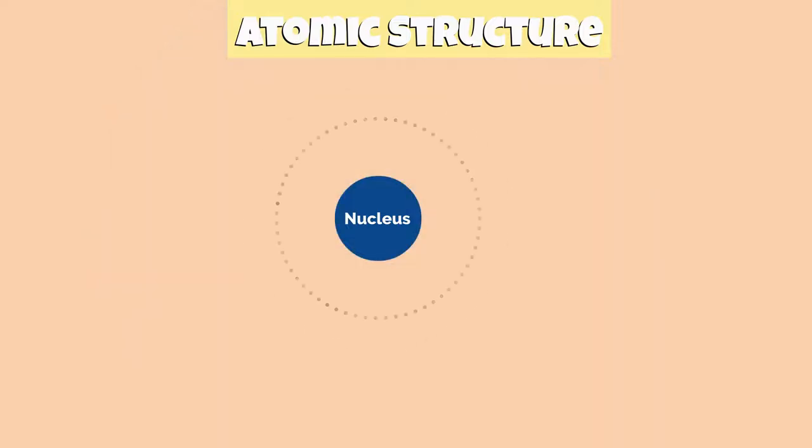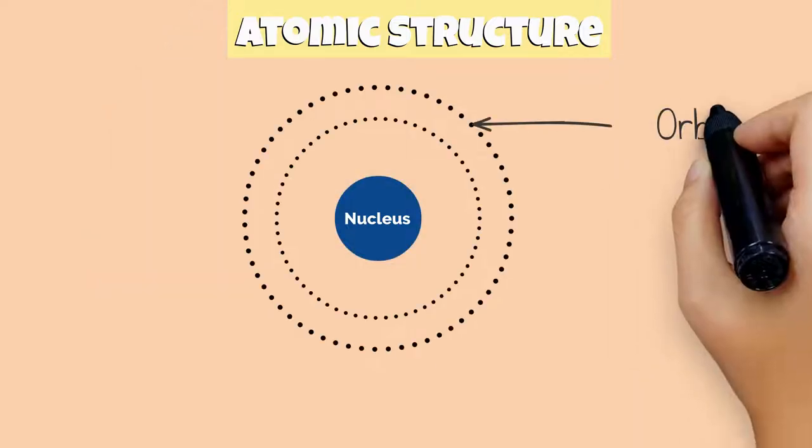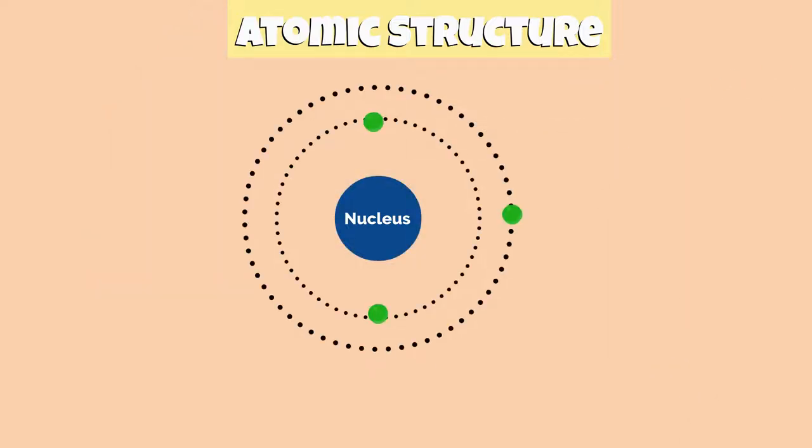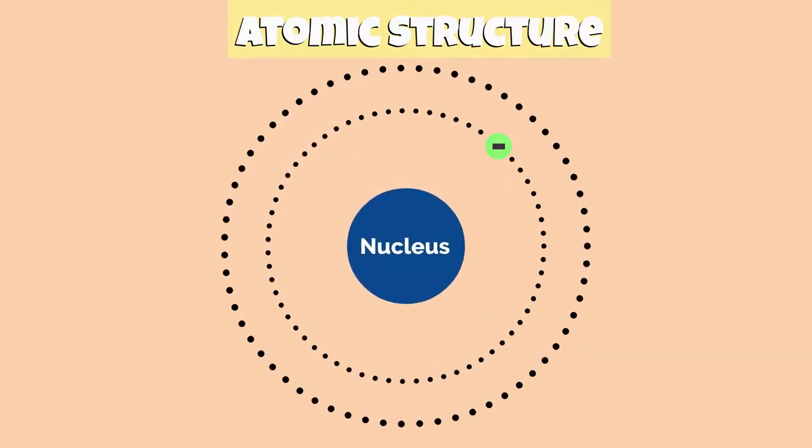The electron cloud has different energy levels called shells or orbitals in which electrons are found. Each energy level or orbital has a limit to how many electrons it can hold.